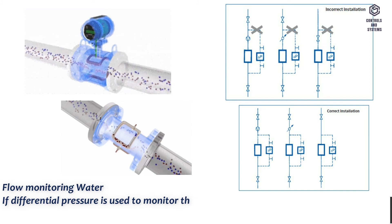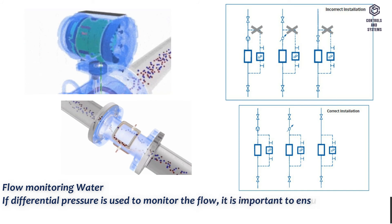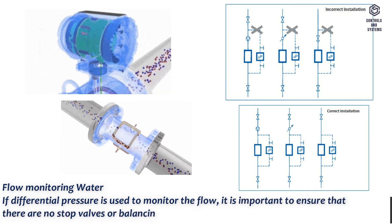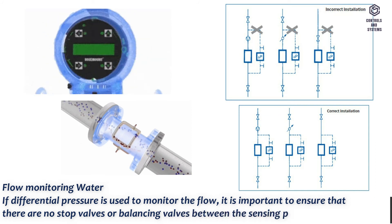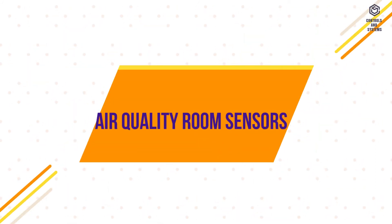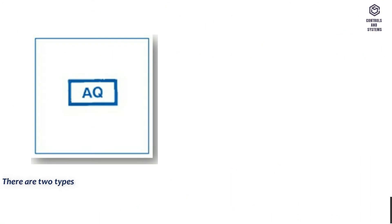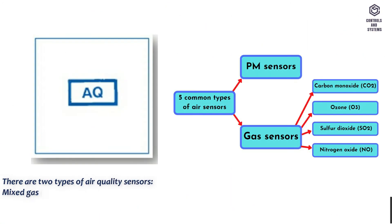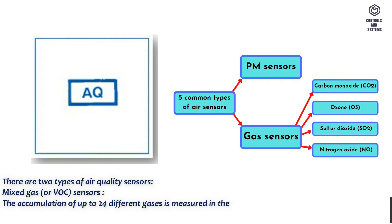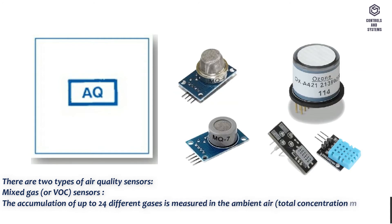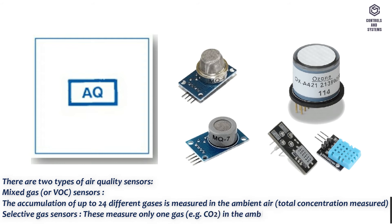For flow monitoring of water using differential pressure, it is important to ensure that there are no stop valves or balancing valves between the sensing points. There are two types of air quality sensors: mixed gas or VOC sensors, which measure the accumulation of up to 24 different gases in the ambient air as a total concentration; and selective gas sensors, which measure only one gas — for example, CO2 — in the ambient air.